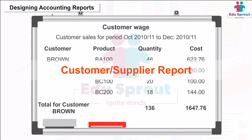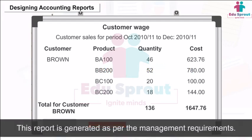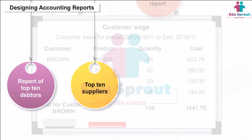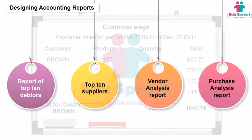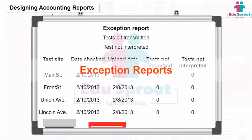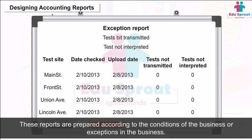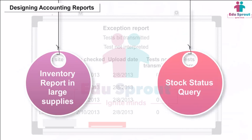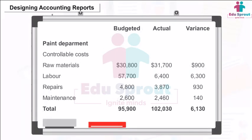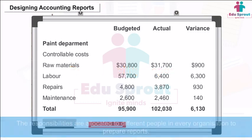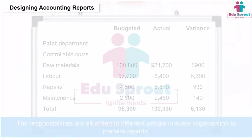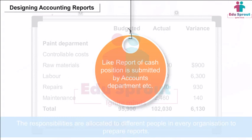3. Customer/Supplier Report — generated as per management requirements, like a report of the top 10 debtors, top 10 suppliers, vendor analysis report, purchase analysis report, etc. 4. Exception Reports — prepared according to conditions or exceptions in the business, for example an inventory report, large supplies stock status query, etc. 5. Responsibility Reports — responsibilities are allocated to different people in every organization to prepare reports, like a report of cash position submitted by the accounts department.